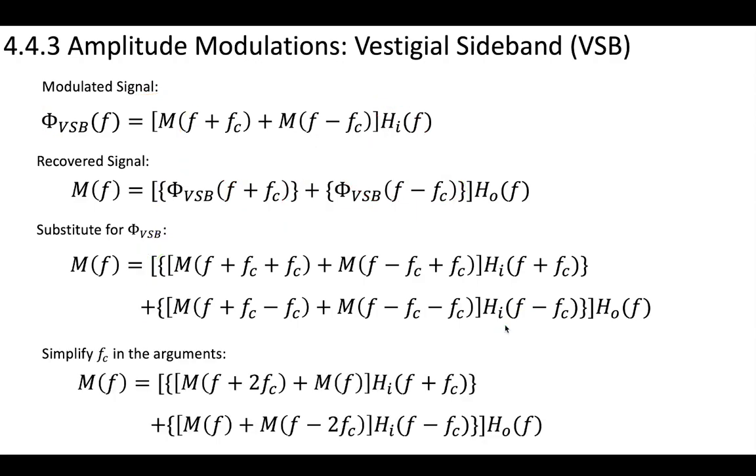Then we're going to simplify the fc and the arguments. So now we have some terms which are f plus 2fc or minus 2fc, and then some terms that are just f. And so this is just like our recovery of our DSB signals that we did previously. Now this makes sense, because we know that in order to get our original message mf back, we're going to need the baseband components. And this and this are baseband components.